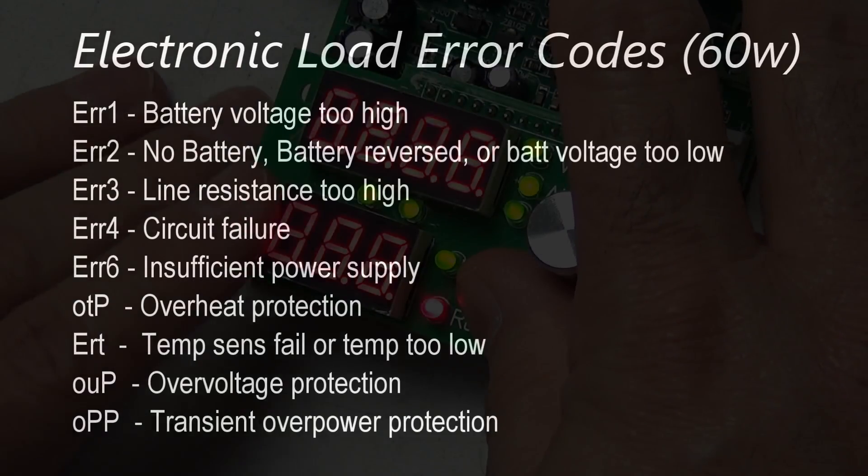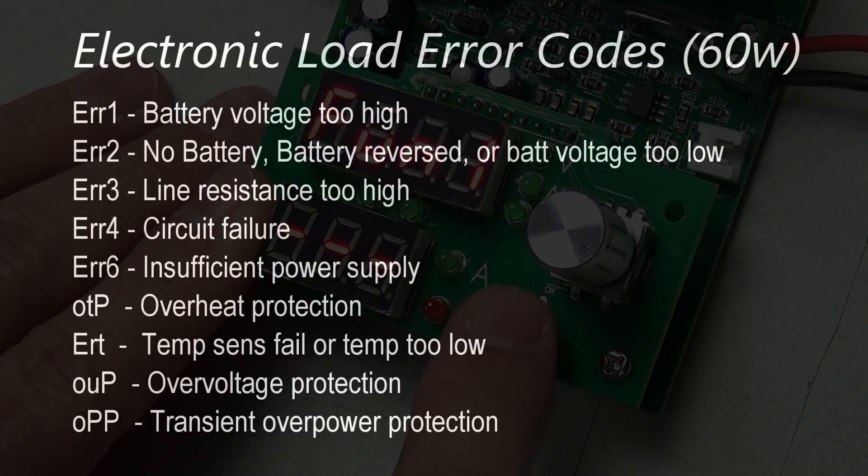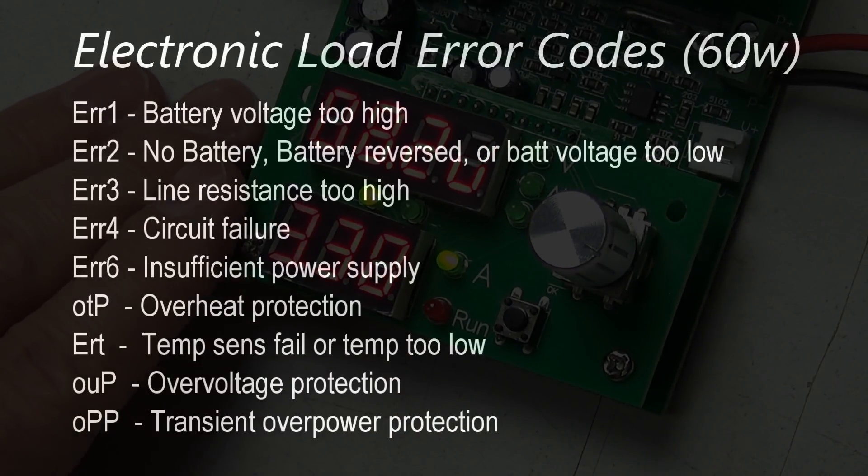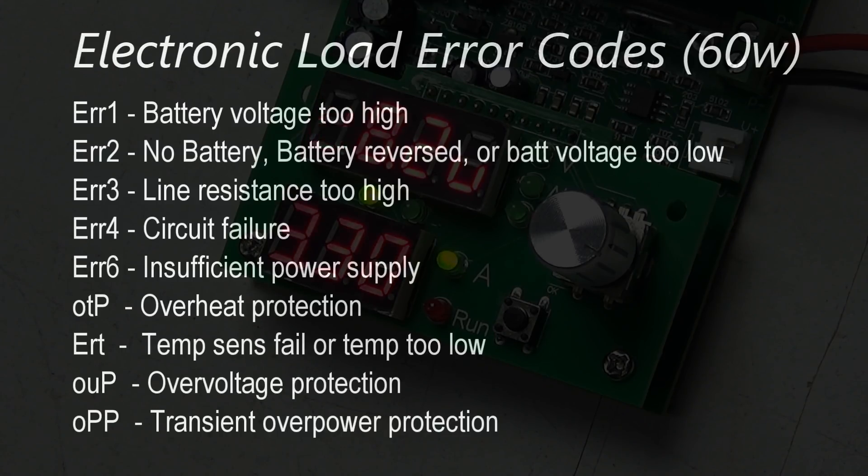Error three is line resistance is too high. I've actually run into this error trying to connect a battery through very thin wires to the electronic load for testing and the current was set too high on the device and it simply gave an error code, so I needed to use thicker wire and that fixed the problem. Error four is circuit failure, I haven't come across that error yet.